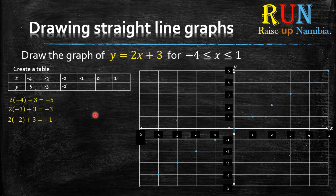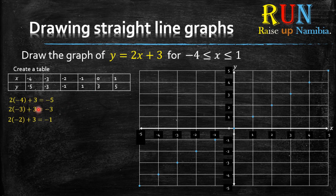The 3 remaining y values are 1, 3, and 5. If you got them correct, give yourself a pat on the shoulder. If you didn't, just repeat the process: take 2x plus 3 and plug in negative 1 for x for the first missing value, then repeat the same process for the remaining ones.